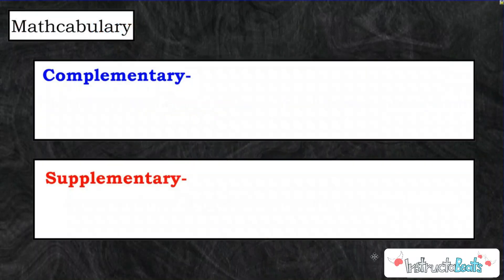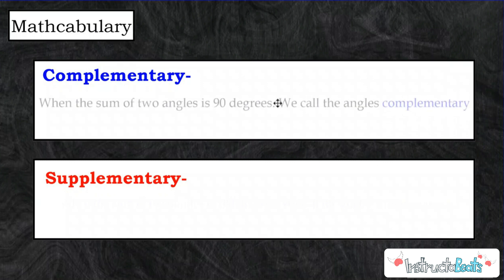So the first thing I'm going to do is we're going to write down some math vocabulary. Complementary and supplementary. What do they mean in regards to angles and math? So complementary angles are when the sum of two angles is 90 degrees. If that is the case, we call the angles complementary. I don't really know how to say it because I do math, not English.